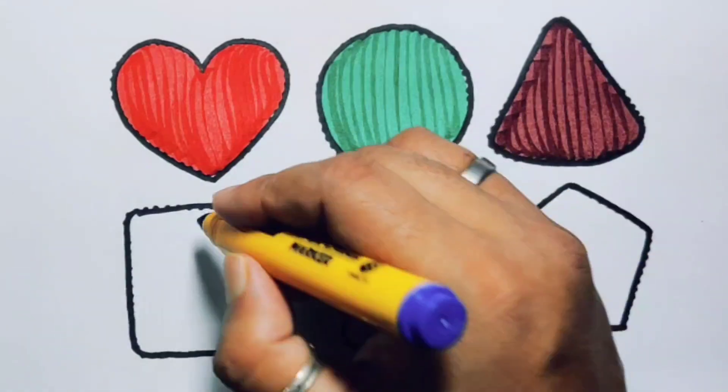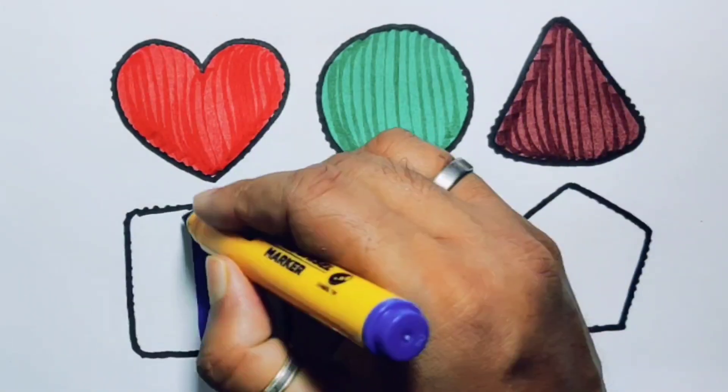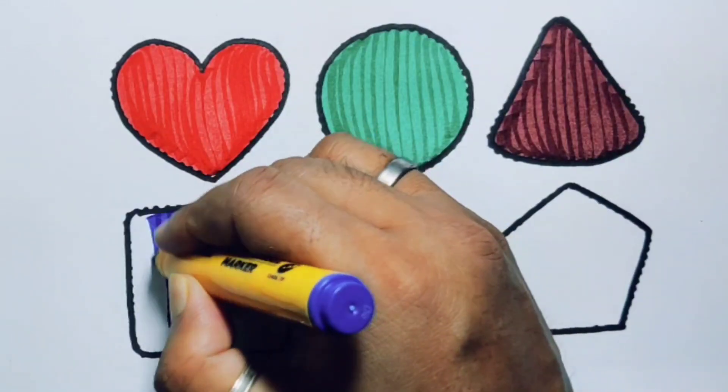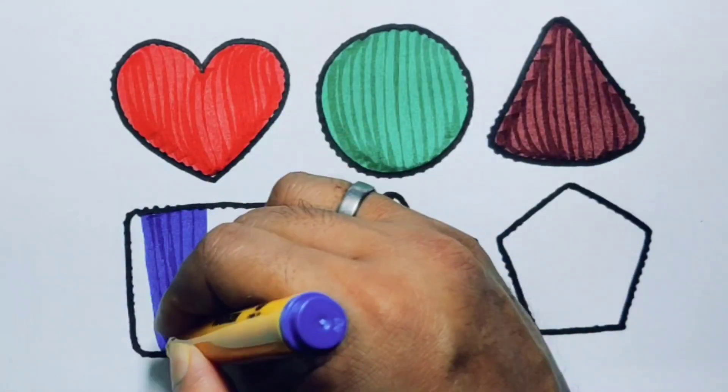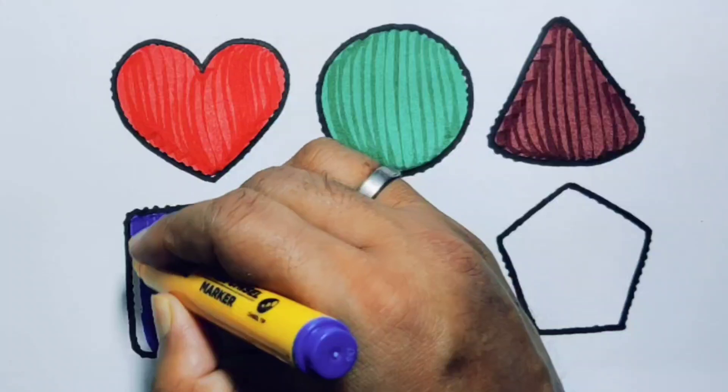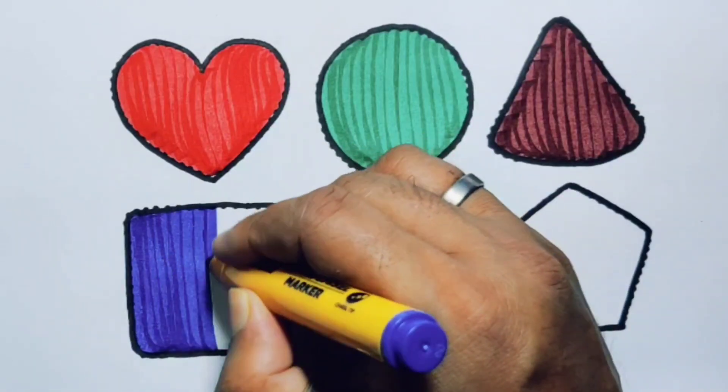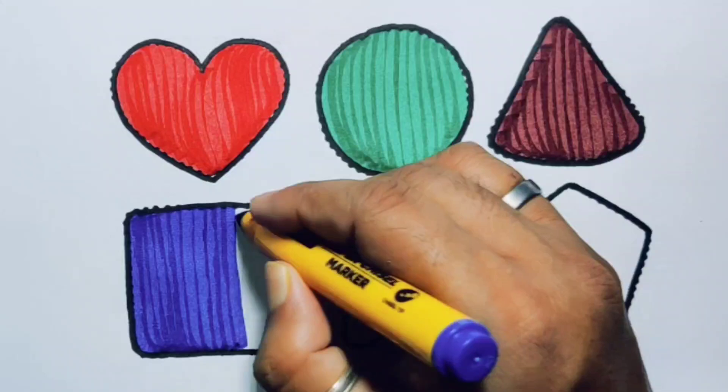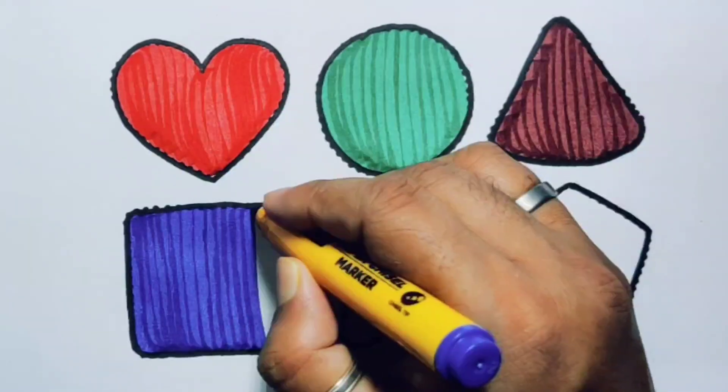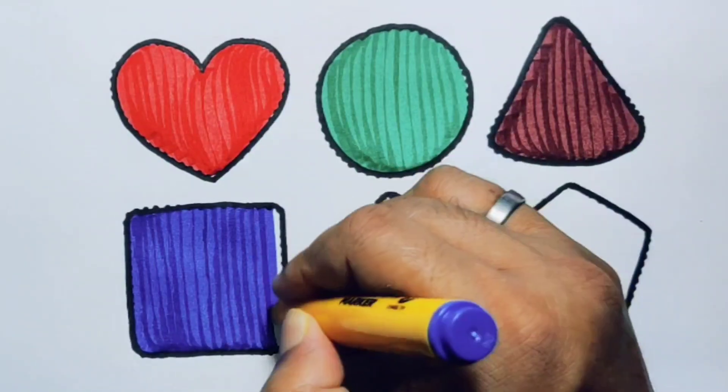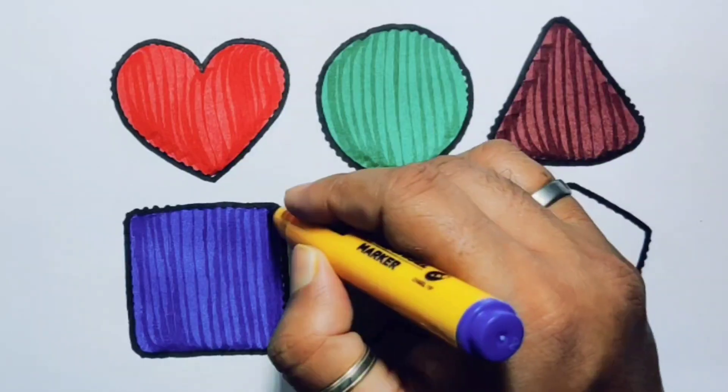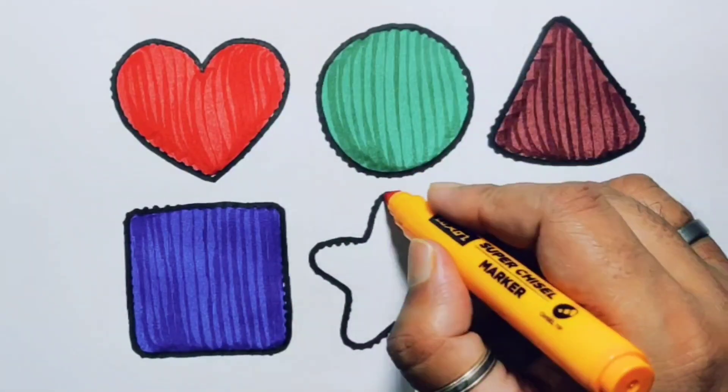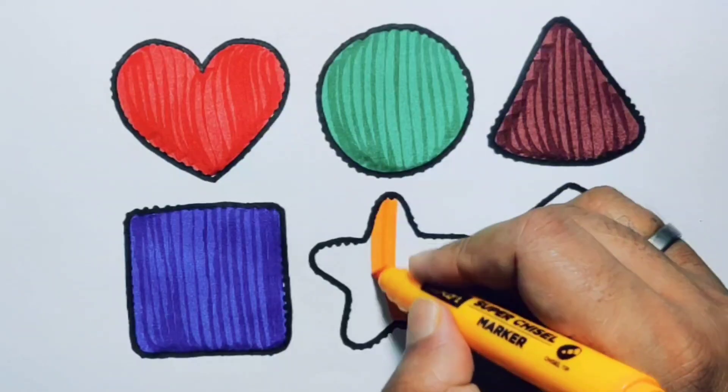Blue color, square. Orange colored, star.